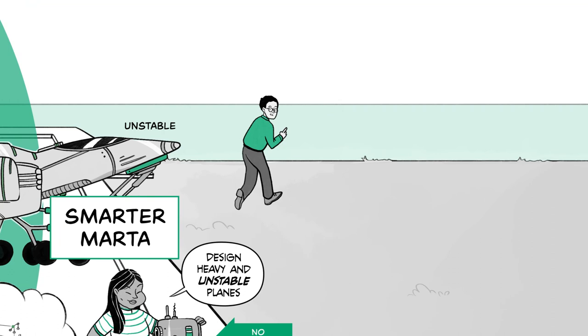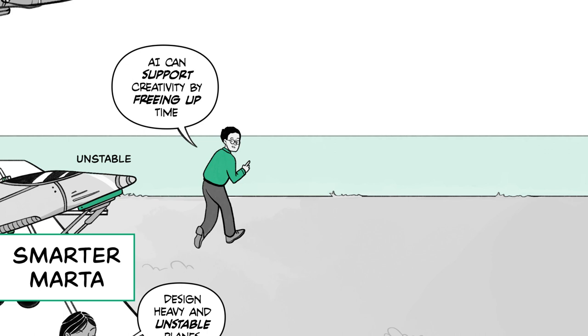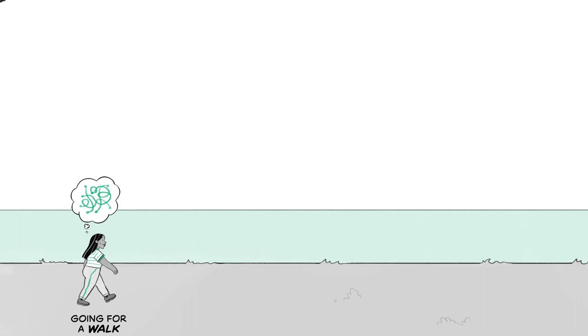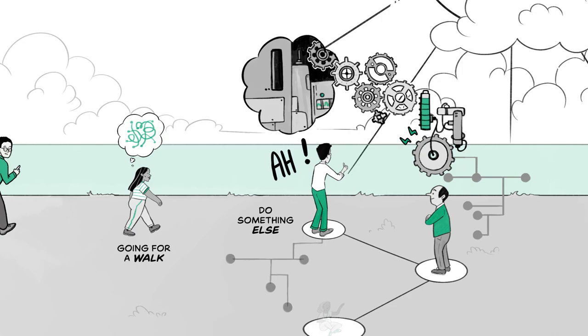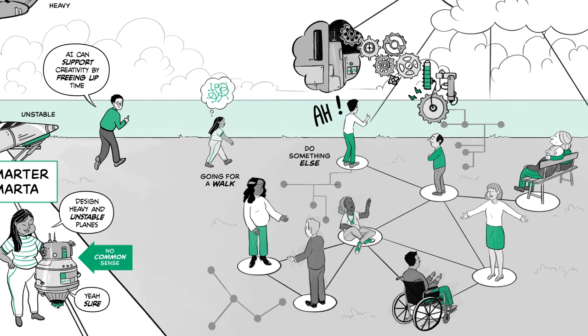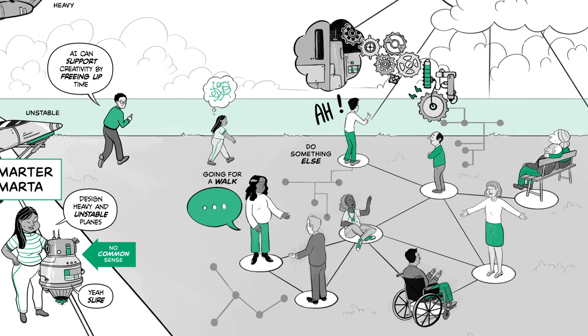But maybe the most significant way AI can support creativity is by freeing up time. Many uniquely human behaviours are important for developing good ideas. Yet we struggle to find time for them, like going for a walk to unwind and reflect. Often, penny drop, aha moments come when we stop focusing on a problem and do something else. Brainstorming with colleagues or networking with inspiring peers are other examples. Research indicates that the most successful innovators regularly engage in such activities.